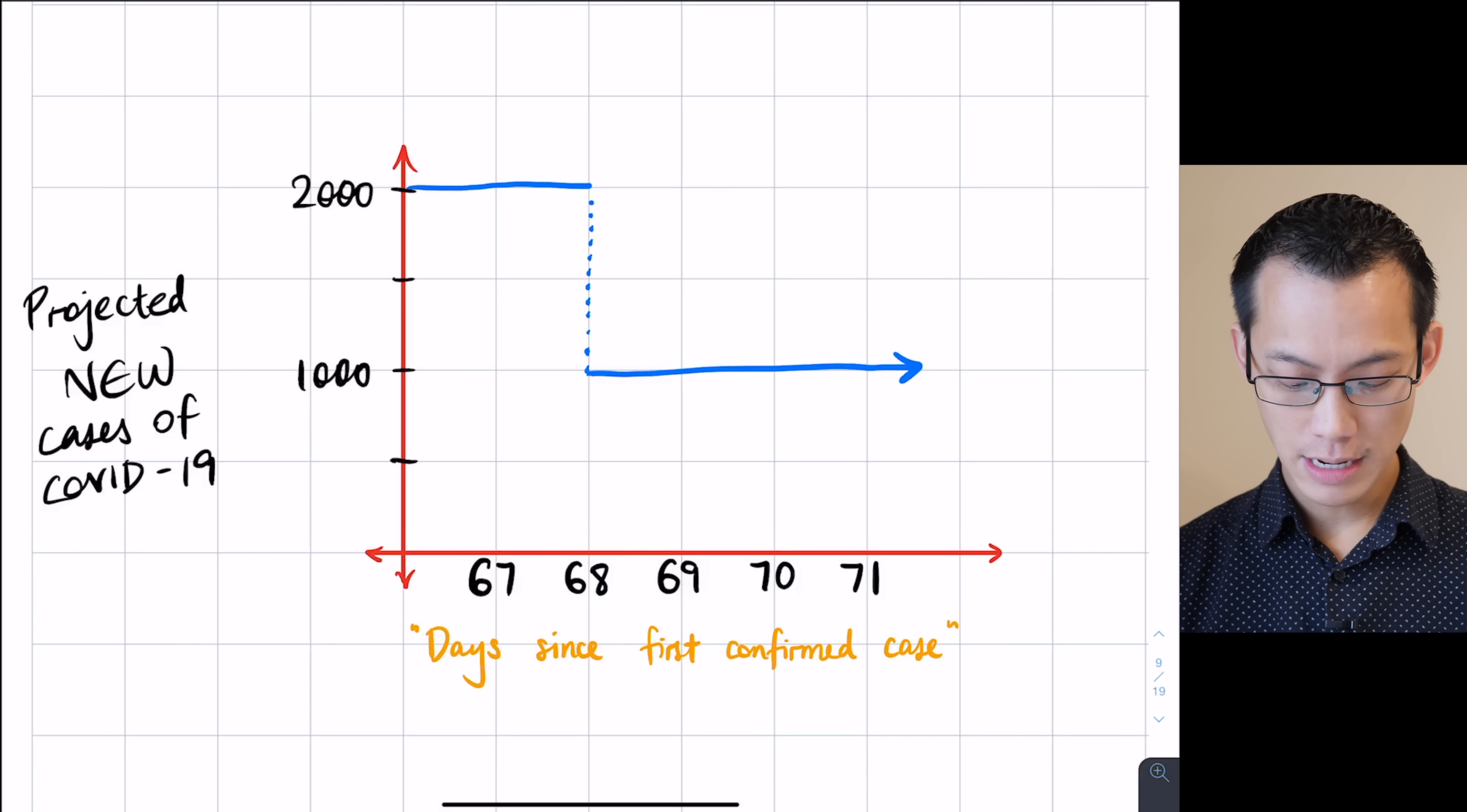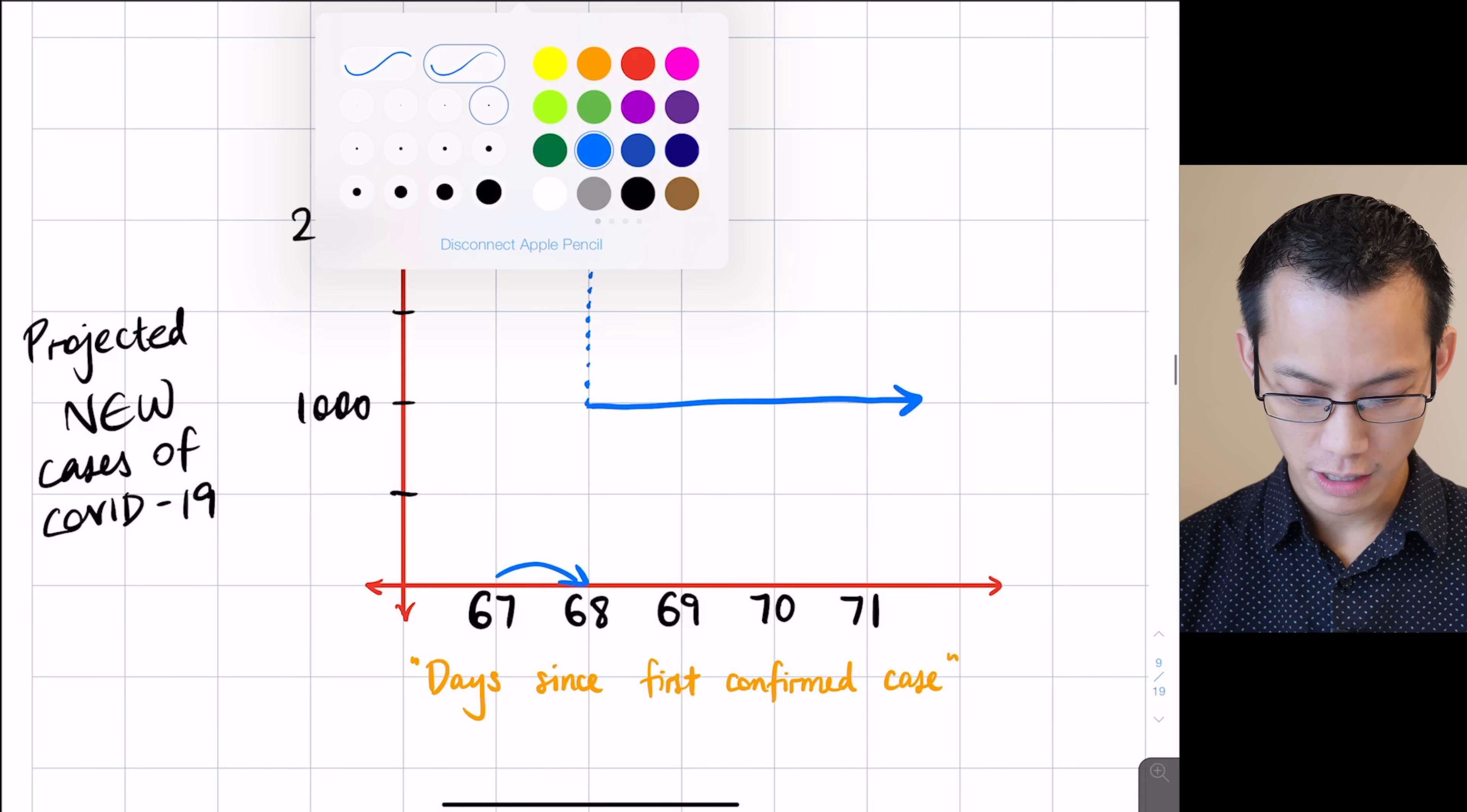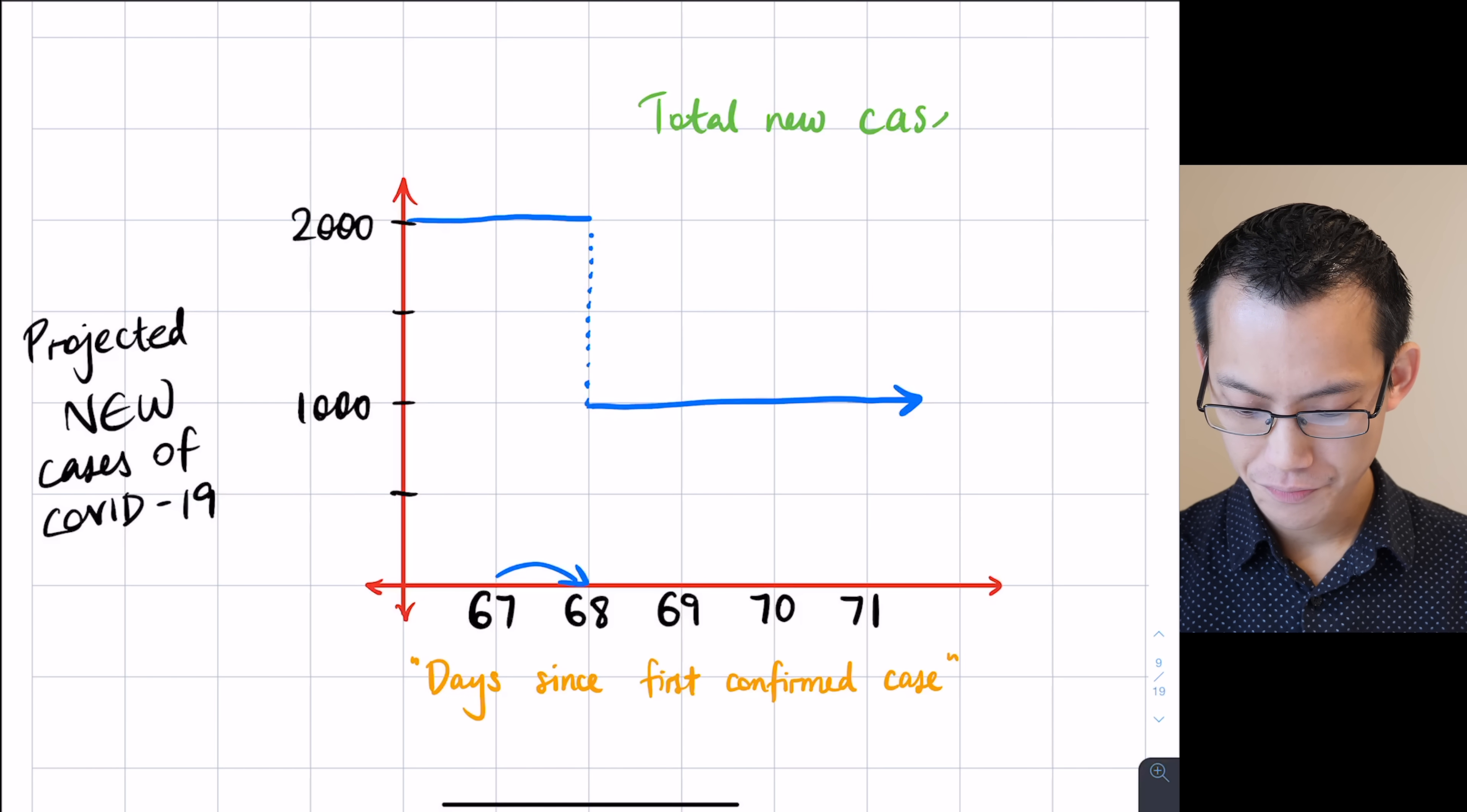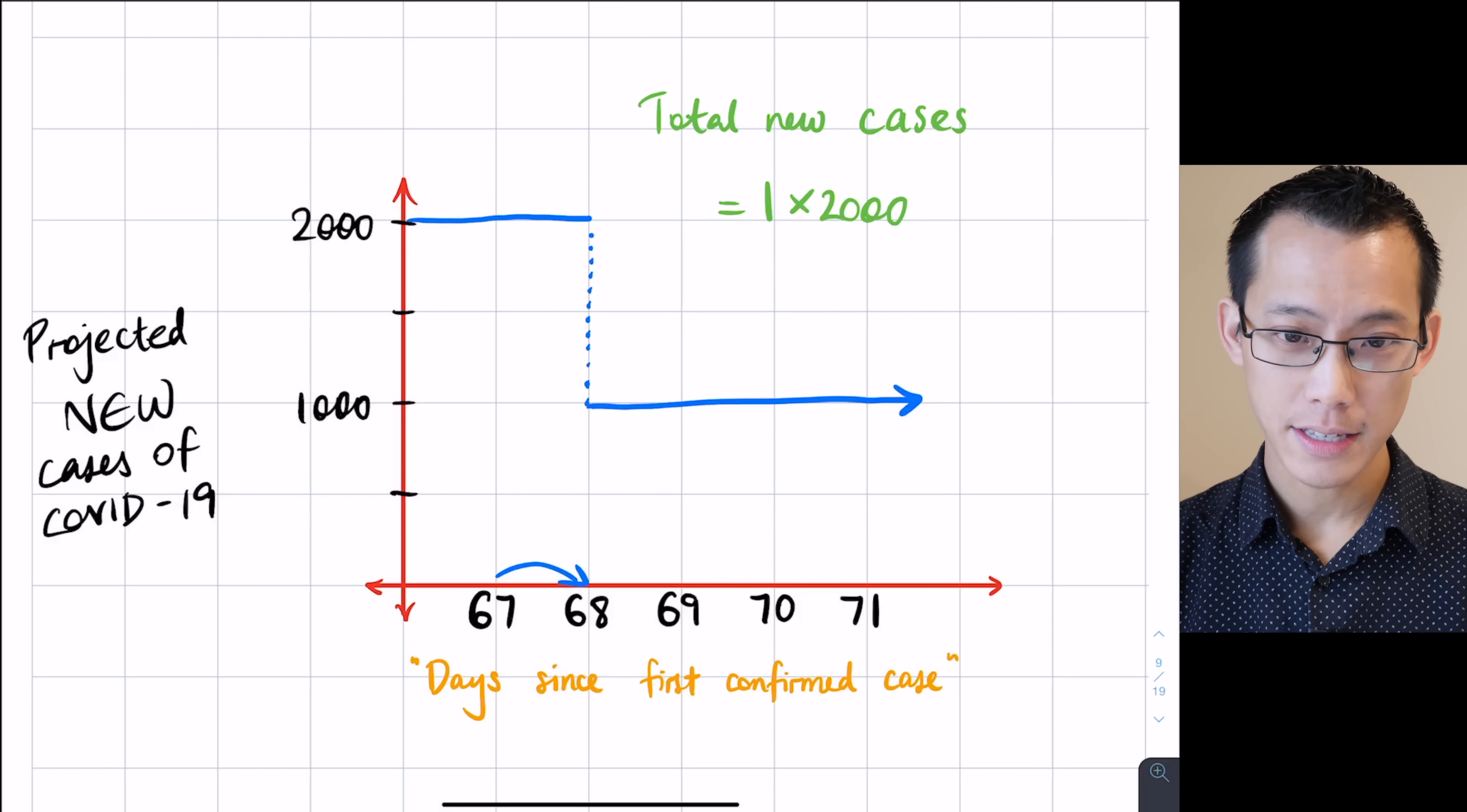Well if you want to work out how many new cases there have been over that time, you would do this in chunks. You'd say well from day 67 to day 68, that's this sort of time period here, there's a single day that passes and during that day 2,000 people are diagnosed. So let's do some working here. If I said the total number of new cases, I should say new cases, I said it but I forgot to write it. The total number of new cases, well for starters there's going to be that one day where 2,000 people are diagnosed. That's from day 67 going over to day 68.